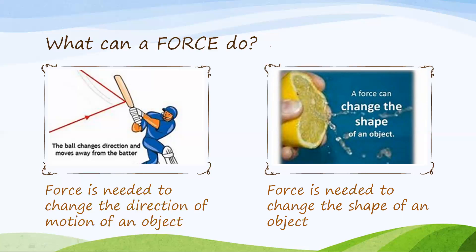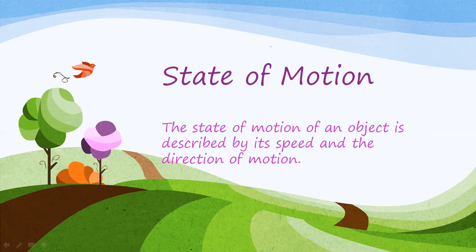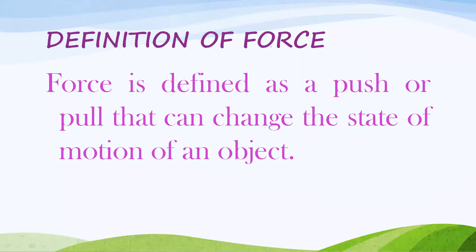When defining force, all these events can be categorized under one term: state of motion. State of motion is described by the speed and direction of motion of an object. When we say the state of motion of an object is changed, it can be a change in speed or a change in direction. So force can be defined as: a push or pull that can change the state of motion of an object.